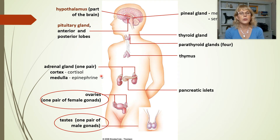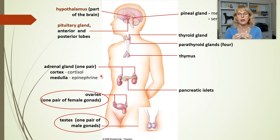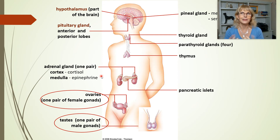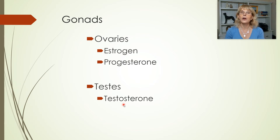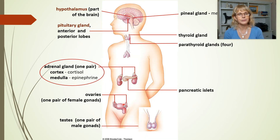The gonads make reproductive hormones. We'll mostly be talking about them when we get to the reproductive system, but it's important to mention now because, like the thyroid gland, they make hydrophobic hormones. The ovaries make estrogen and progesterone, but also testosterone. And the testes make testosterone, but also estrogen. All of these hormones made by the gonads are steroid hormones, and they are all hydrophobic.